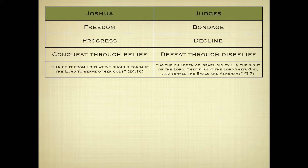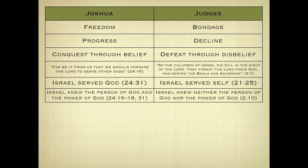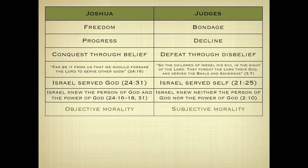'Far be it that we should forsake the Lord and serve other gods,' they said in Joshua 24:16. Yet Judges 3:7 says, 'The children of Israel did evil in the sight of the Lord and forgot the Lord their God and served the Baals and the Asherahs.' Israel served God in Joshua but served themselves in Judges. They knew the person and power of God in Joshua, but in Judges they knew neither. We go from an objective morality to a subjective morality — doing what is right in their own eyes rather than in the sight of the living God.